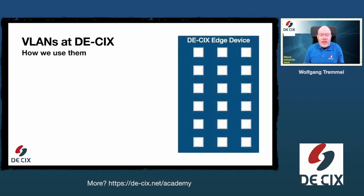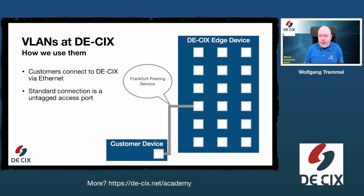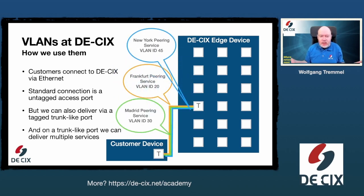The standard DE-CIX access product, the peering product, was always to deliver a peering service on an untagged Ethernet port. You could get the Frankfurt peering service on a standard Ethernet port and just peer in Frankfurt. With the introduction of multiple exchanges and multiple peering locations, you could get multiple services on one port. But to do that, we had to tag the ports with a VLAN ID. So once you have a tagged trunk port, you could get multiple peering services on one physical port, each tagged with a different VLAN ID.